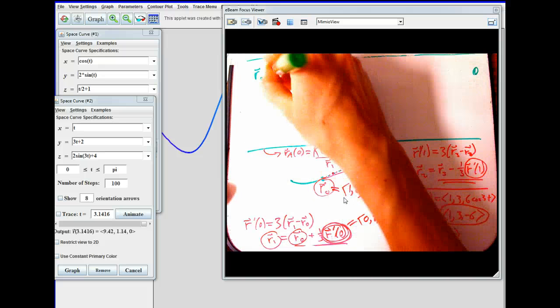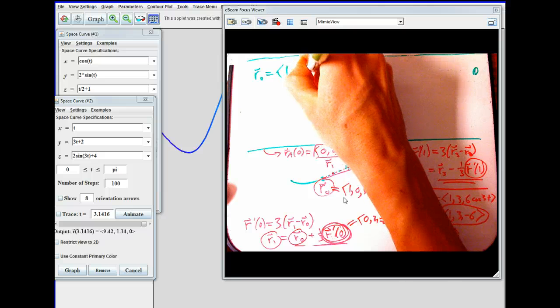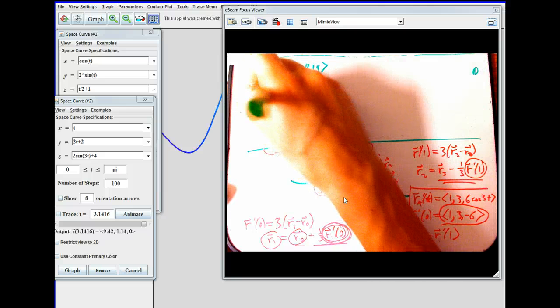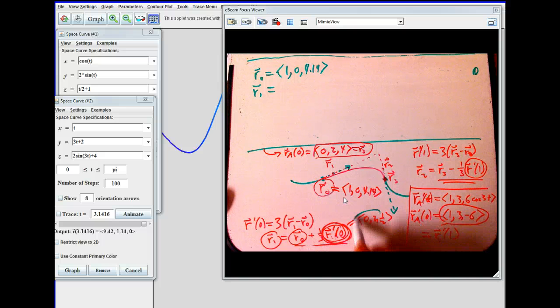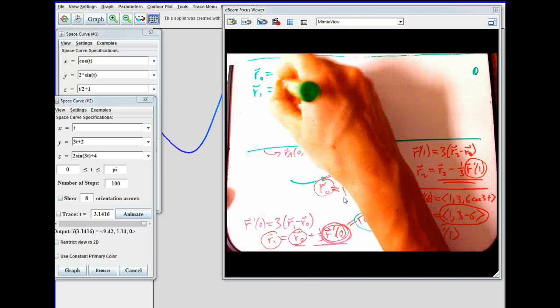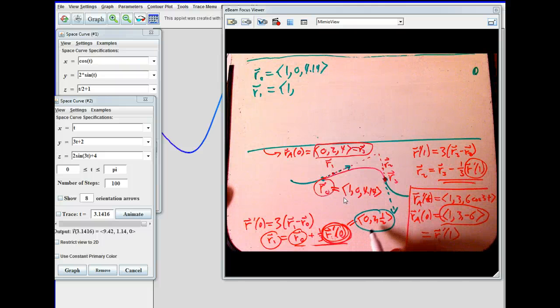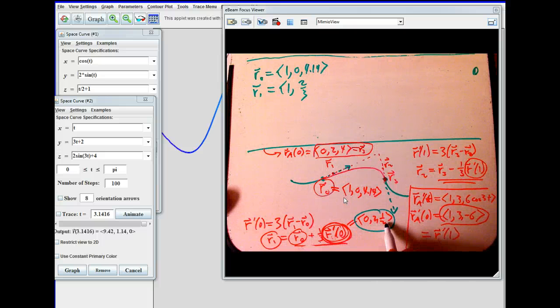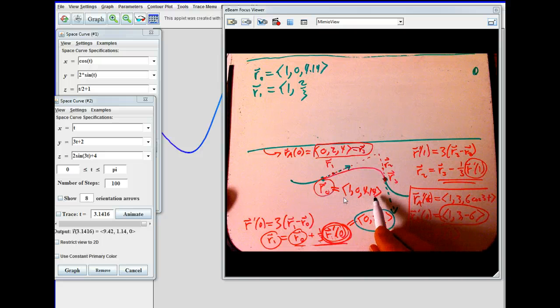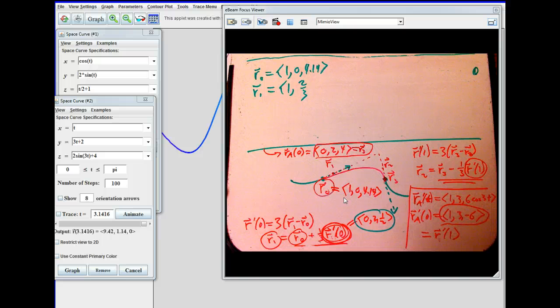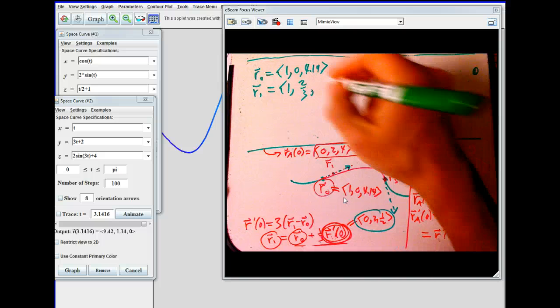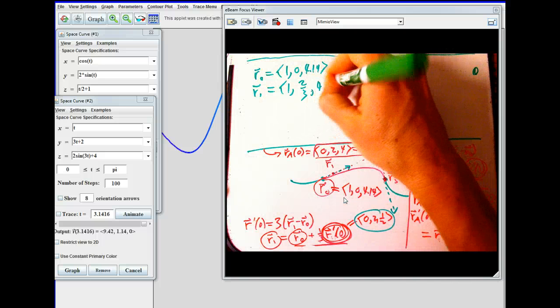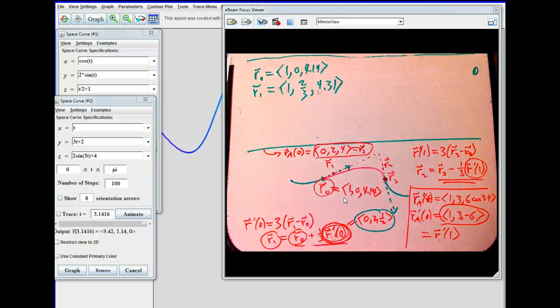R naught is equal to one, zero, four point one four. R one is R naught plus a third of this guy. So we're going to get one, two thirds, and then one sixth plus four point one four. And so that's going to be about four point three one. So there's our one.